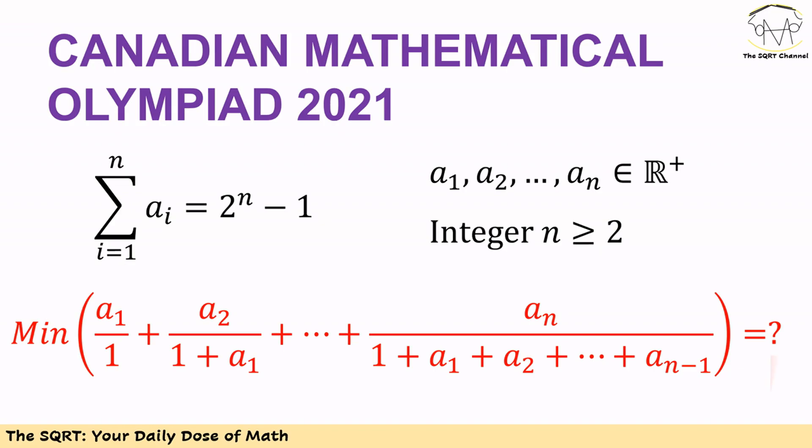Hello everyone, in this video we are going to talk about a problem from the Canadian Mathematical Olympiad 2021. In this problem we have a1, a2, up to an as positive real numbers, n is an integer greater than or equal to 2.